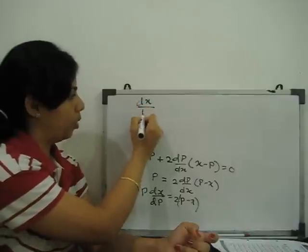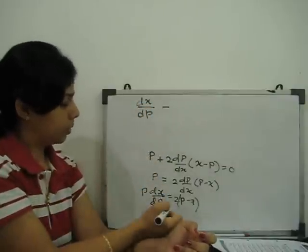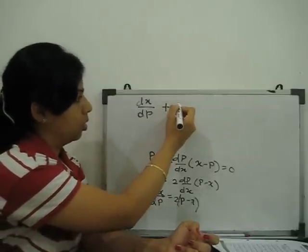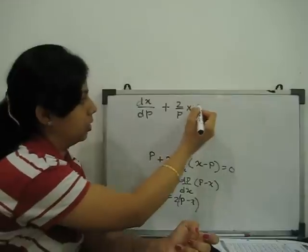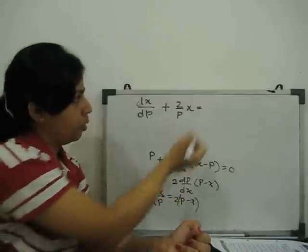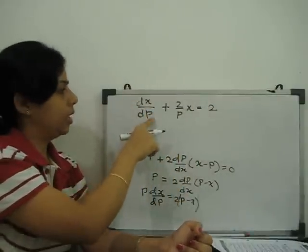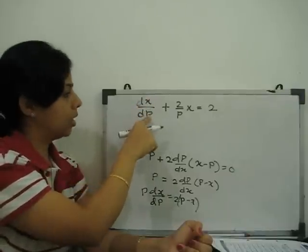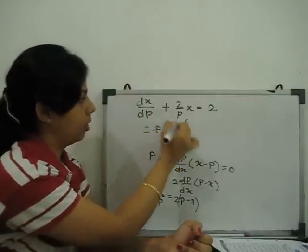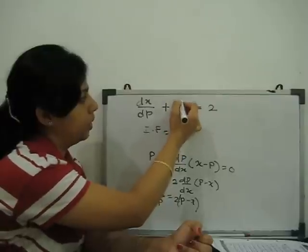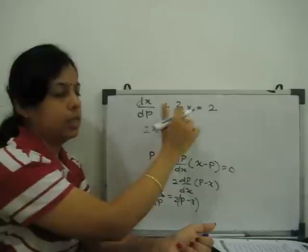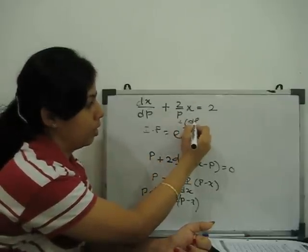See, dx upon dp minus if this comes here. So, plus 2 by p into x equal to 2p upon p is equal to 1p. So, linear in p and x where dependent variable is x and independent is p. Our integrating factor is e to the power p. This term is p where this linear is dy by dx plus p is equal to q. So, our p is this 2 dp upon p.